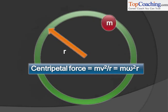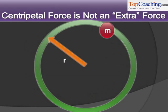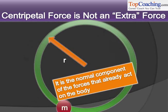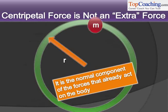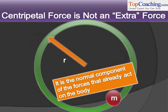This force is called the centripetal force. If a body moves in a circle, then there must be some centripetal force acting on that body. Note that this centripetal force is not an extra force — it represents the normal component of the forces that already act on the body. The forces that are already acting on this particle in the direction normal to the motion of the particle comprise the centripetal force. We add up the normal components of the forces already acting on the body and we call them the centripetal force.